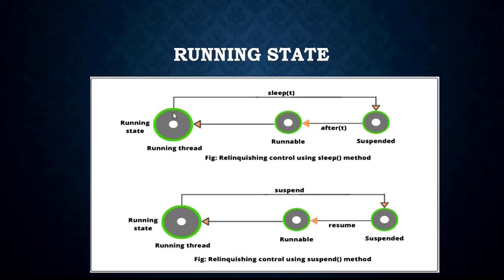For example, if a thread reaches the Runnable state and then the Running state, but is not executed within the given time slot, it goes into sleep mode. For a certain amount of time that thread will be in sleeping mode. After that time elapses, it will again enter the Runnable state — it won't go straight to the Running state. It will queue up in the Runnable state after the sleep time has elapsed.